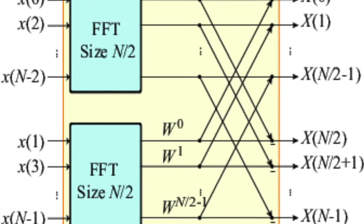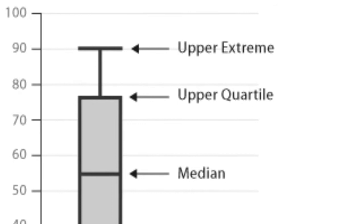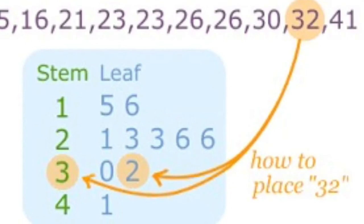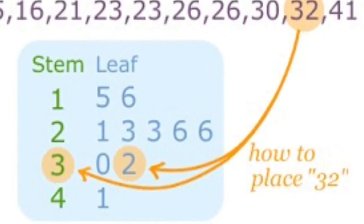He also invented the box plot and stem-and-leaf plot, which we're all familiar with. This was a means to display groups of data, and we still continue to use them today. The box plot helps us visualize the data by putting it into quartiles and indicating the variability outside of it. Stem-and-leaf plots show frequency of the data.